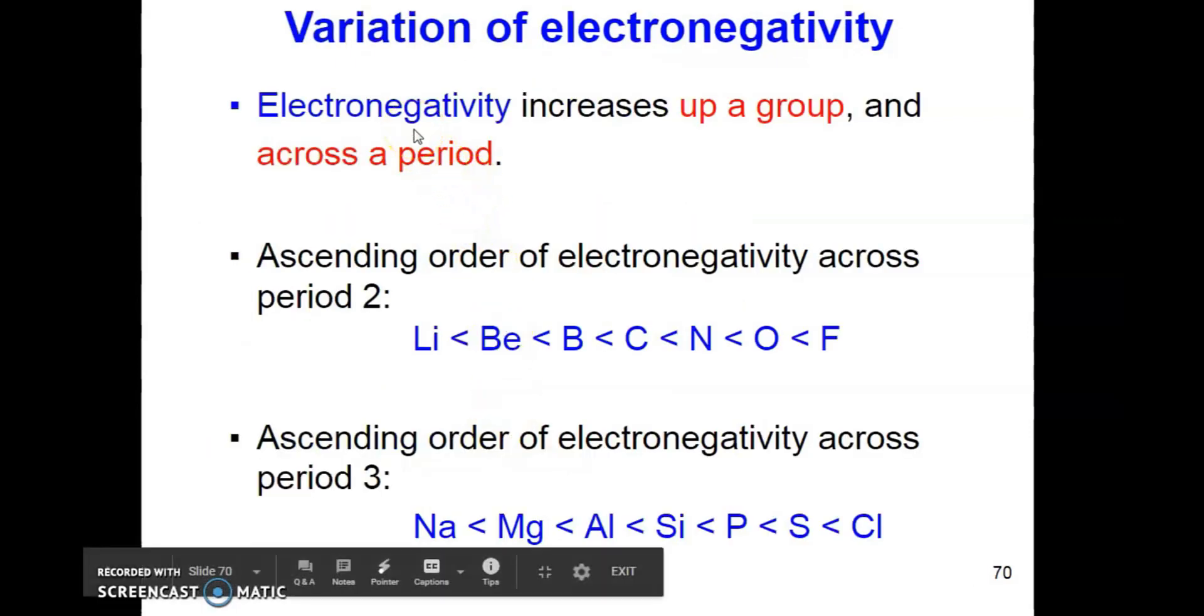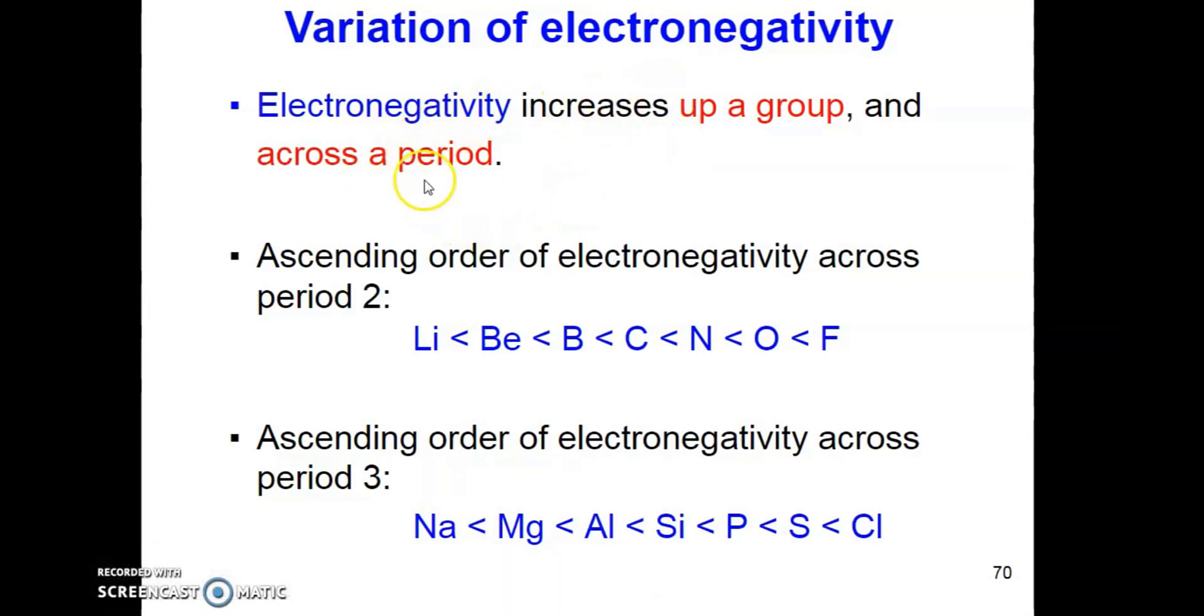For variation of electronegativity, we can conclude that electronegativity increases up a group and across the period. For example, across period 2,